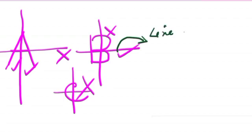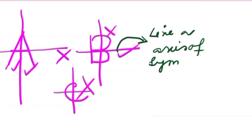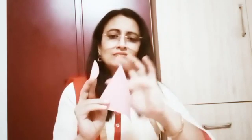Now I'm showing you some figures — help me recognize them. Are these shapes congruent? No — the pairs of corresponding sides of these triangles are not equal, so these are not congruent.